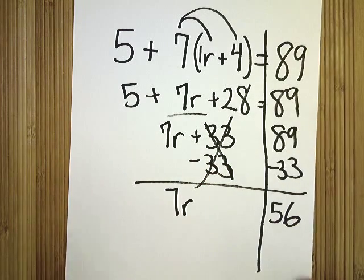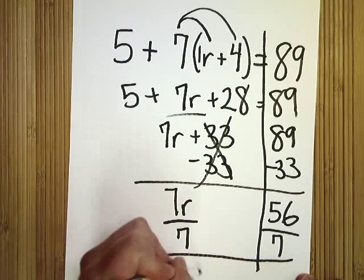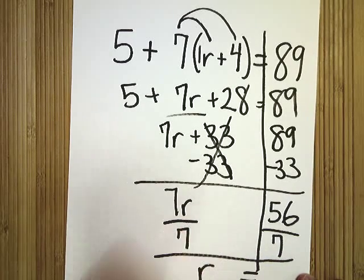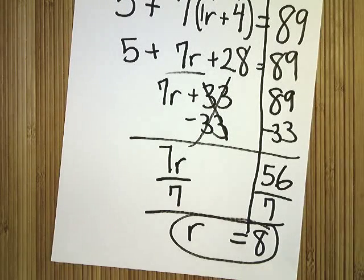And I'm going to finish him. Divide by seven. R equals fifty-six divided by seven is eight. Right there. There's your final answer.